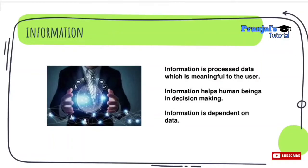The next term is information. We can refine and process meaningful data — this is known as information. Information is processed data which is meaningful to the user. Information helps human beings in making decisions. Data is not as meaningful, so decisions based on data alone are slower, but information is more meaningful than data.